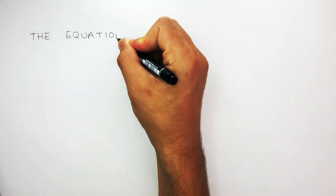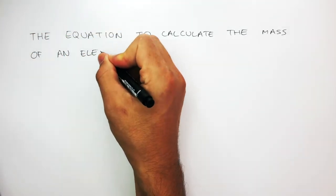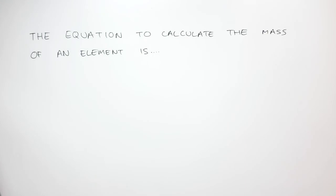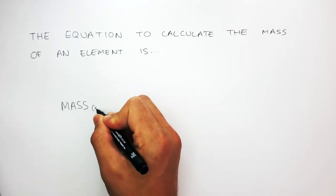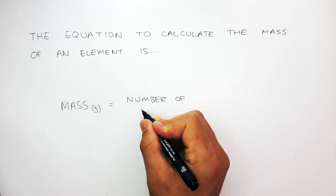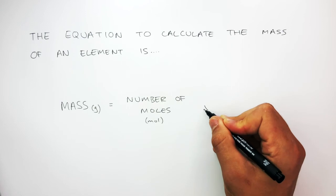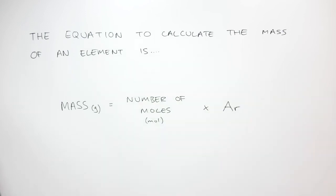The equation to calculate the mass of an element is: mass in grams equals number of moles (unit: mole) times AR.